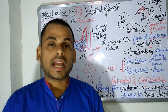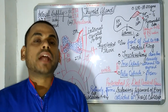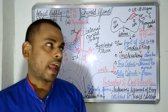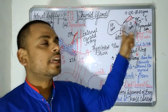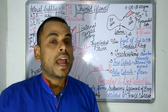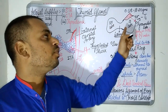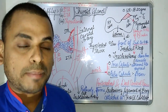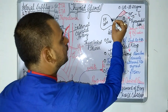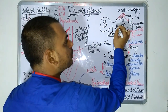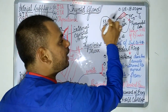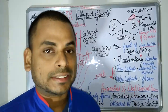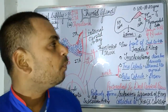The thyroid gland is basically a butterfly-shaped gland having two lobes — the right and the left lobe — and these two lobes are connected together by means of an isthmus.